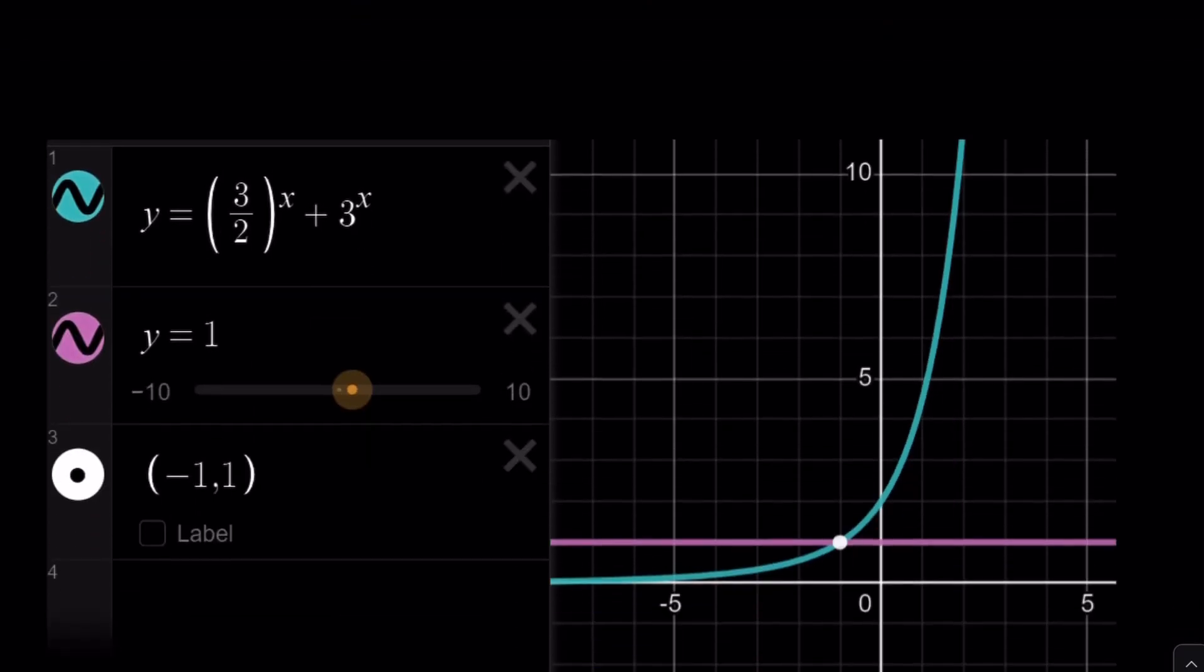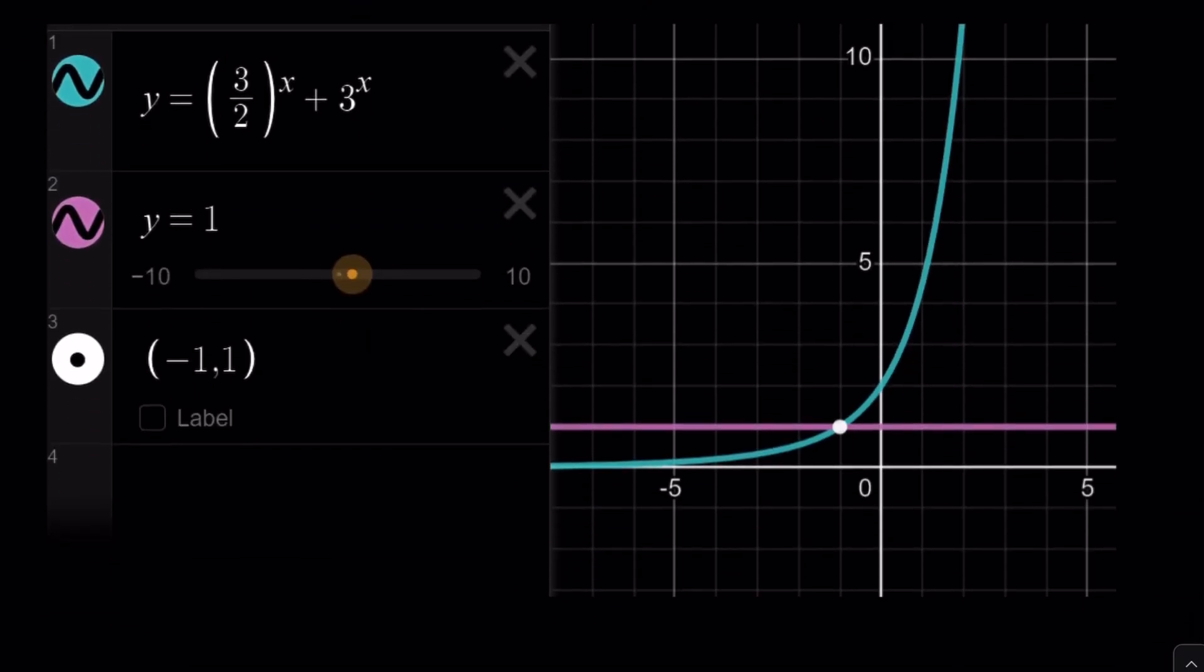Okay, let's go ahead and take a look at the graph. And hopefully that will make it a little more clear. So I have the graph of (3/2)^x + 3^x. As you can see, it's an increasing graph. As x approaches negative infinity, y approaches 0. As x approaches positive infinity, y approaches infinity. It's an increasing function. y equals 1. And they intersect at negative 1, 1. Which means x equals negative 1 is the only solution.